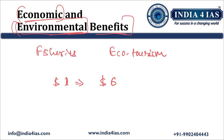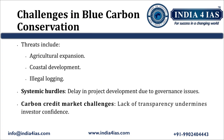Regarding environmental benefits, blue carbon ecosystems provide habitat for various living organisms. Seagrass meadows provide habitat for fisheries, while mangroves provide habitat for various birds and reptiles. These ecosystems are also important in avoiding global warming and climate change.